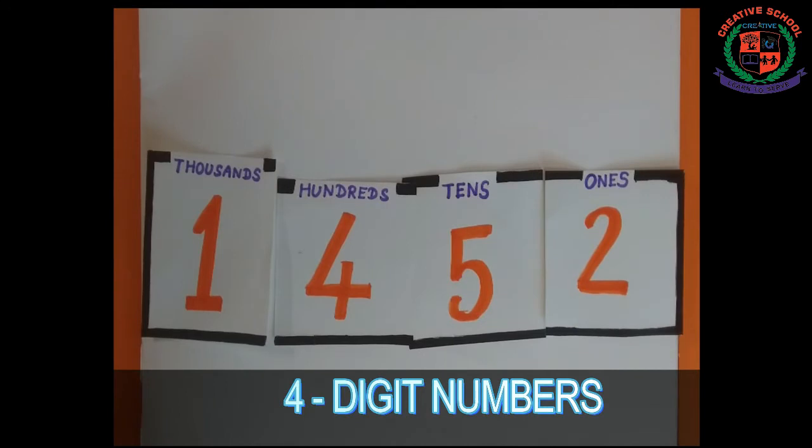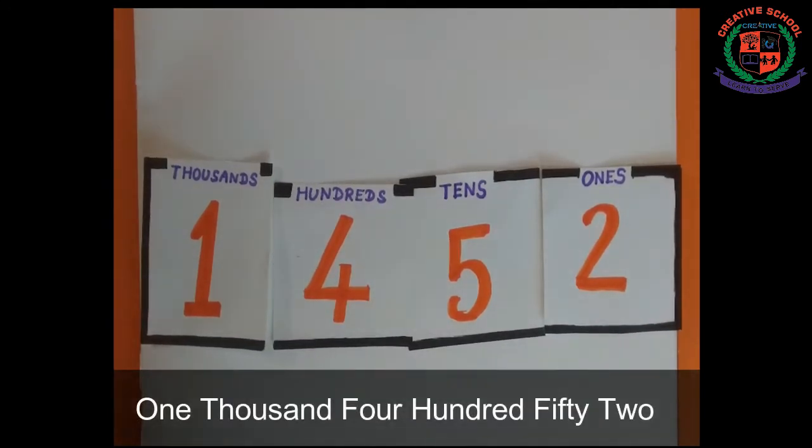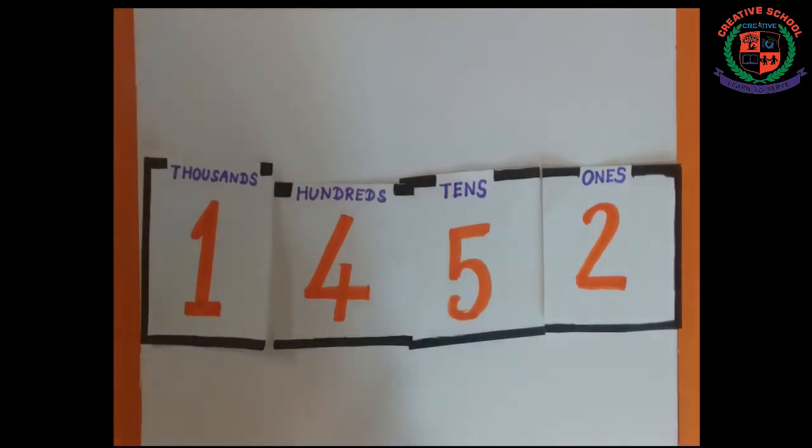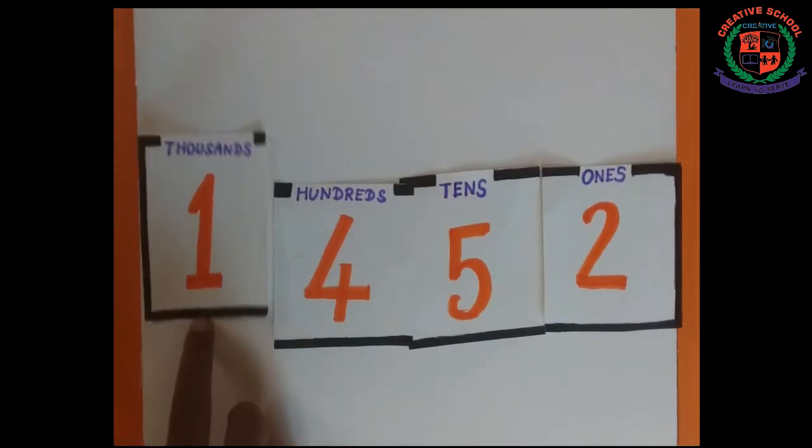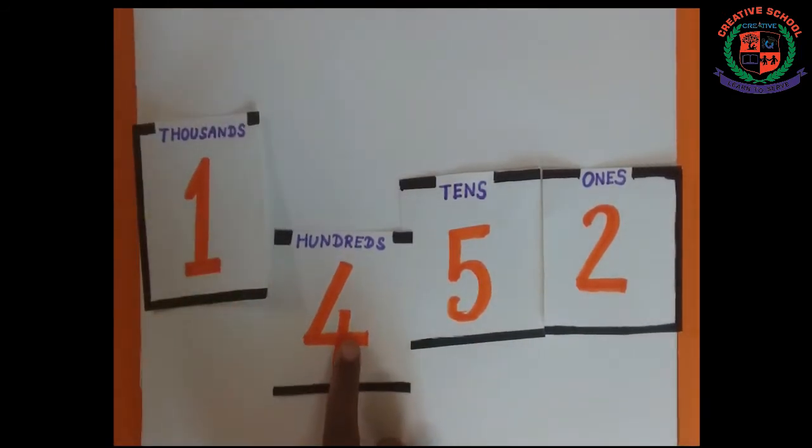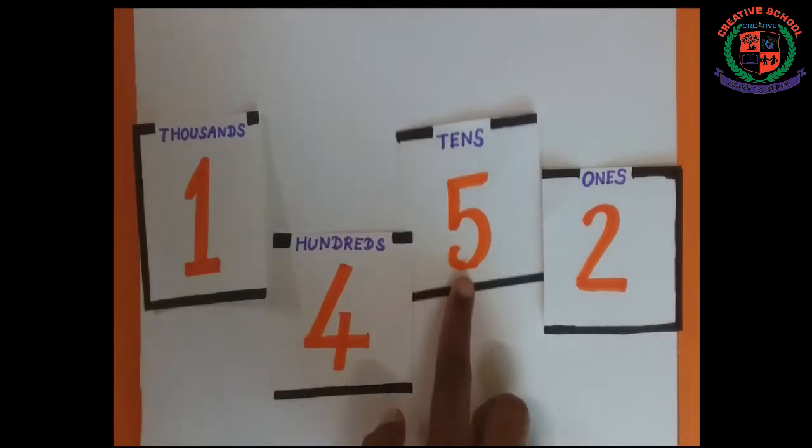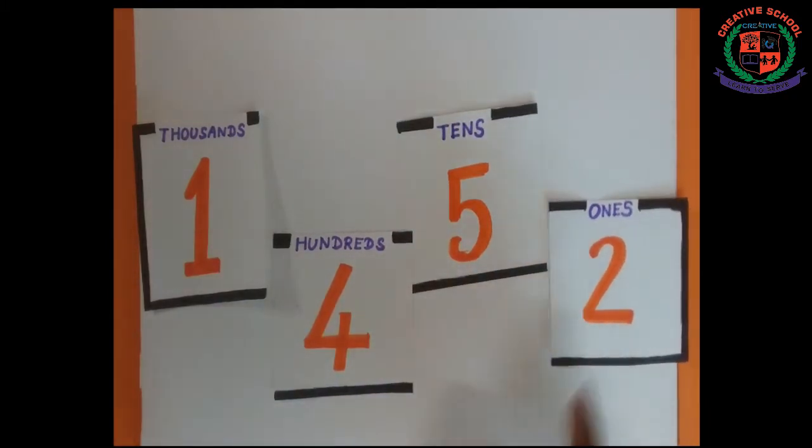Now let us learn about 4-digit numbers. Let us check the number 1452. It has 1 thousand, 4 hundreds, 5 tens, and 2 ones.